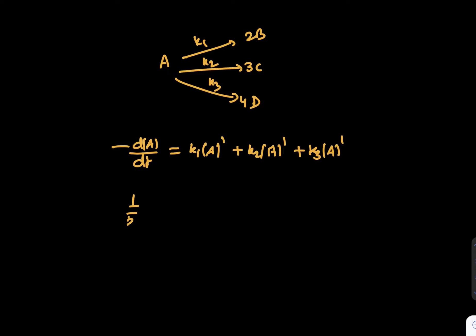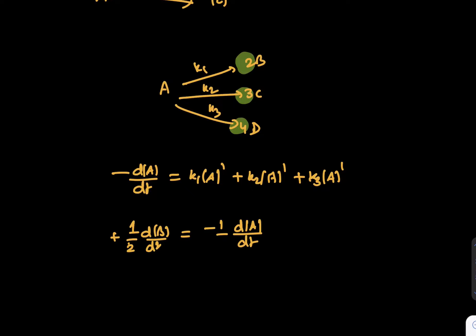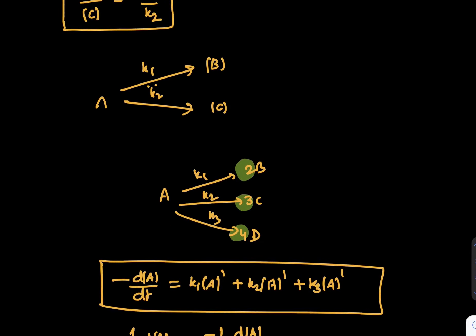At the same moment, what is 1 by 2 dB over dt? 1 by 2 dB over dt is minus 1 by 2 dA over dt. Because B, the term written is 2 here, this is 3 and this is 4. So we can say dB by dt is actually 2 times dA by dt. So all those terms you have to keep in mind and then only we can solve this question. So I hope this part is clear that we can do this way.